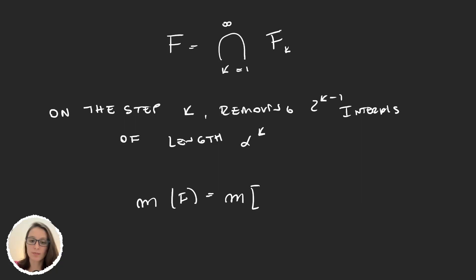So the measure of [0,1] minus the sum from k equals 1 to infinity of everything that we subtracted. And we took 2^(k-1) intervals of length α^k.